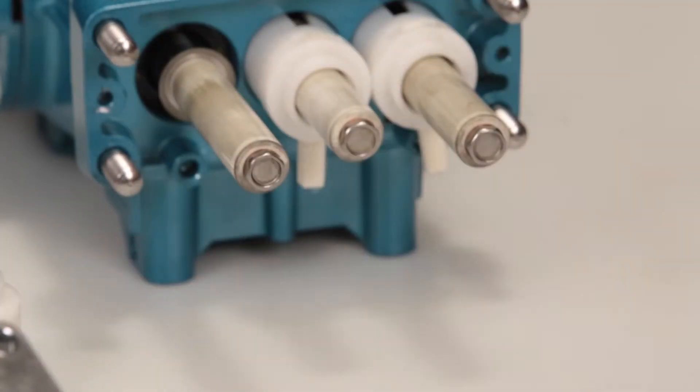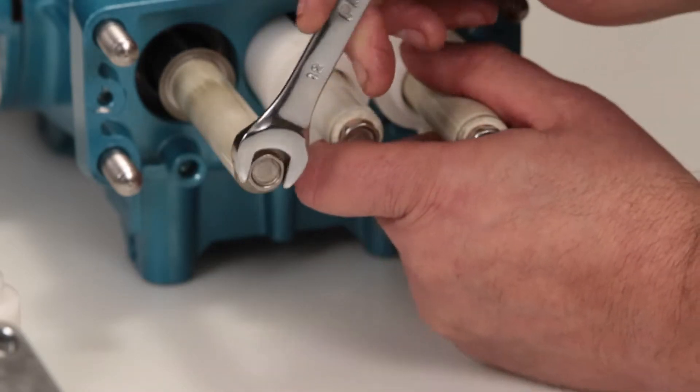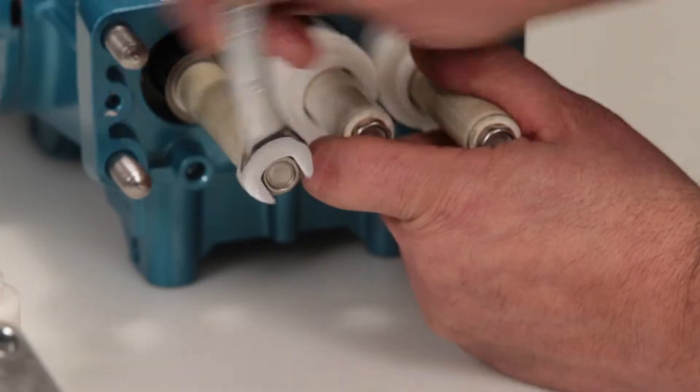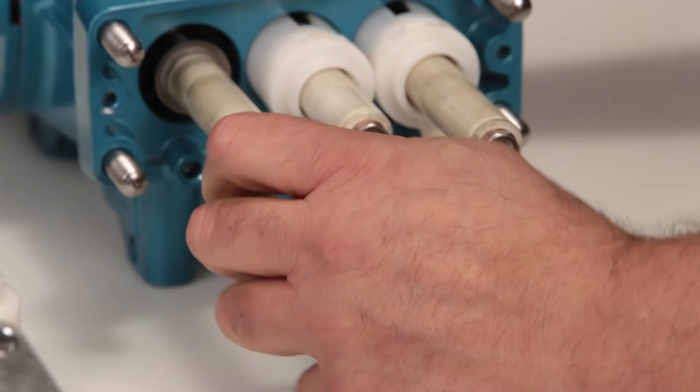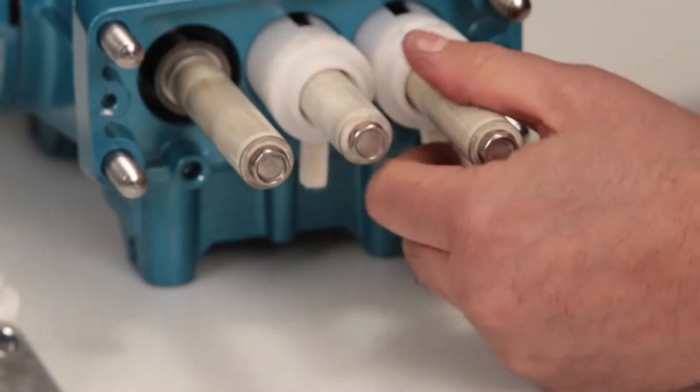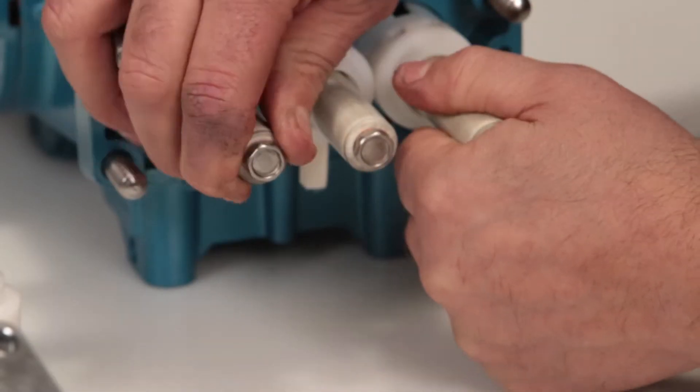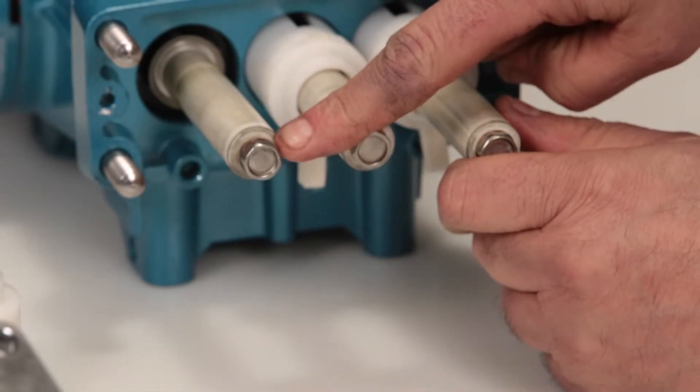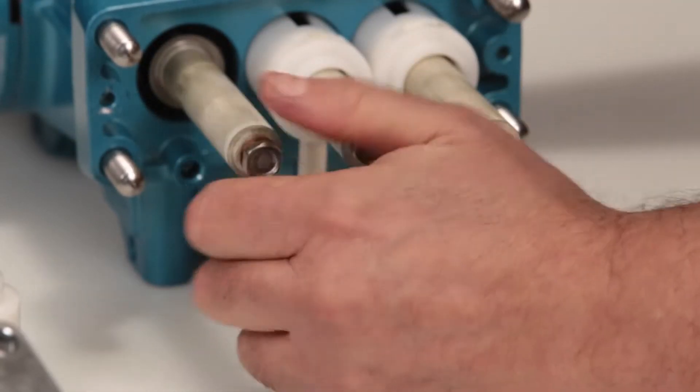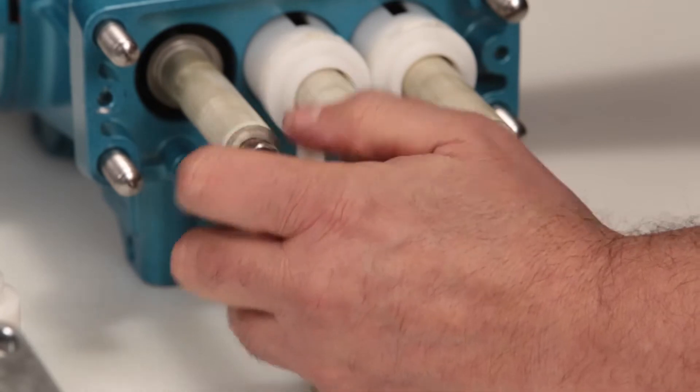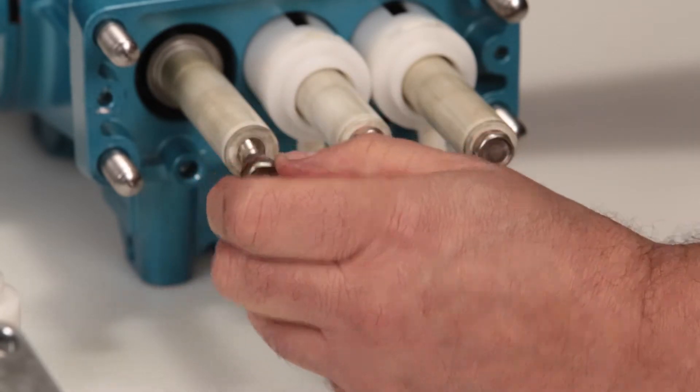Using a 12mm wrench, loosen the plunger retainer. Before completely removing, stop and push the plunger toward the drive end to break it loose from the retainer. Completely remove the plunger retainer.